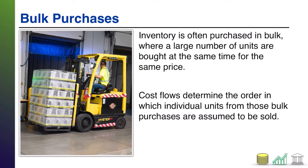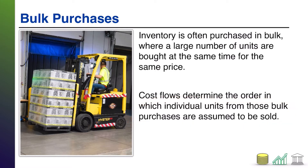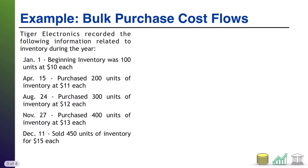Why does this matter in terms of cost flows? When a company does cost flows, they are basically choosing a method by which to establish what inventory they sold. They have to figure out which pieces of the bulk purchases actually got sold and should be factored into cost of goods sold, versus which pieces are left behind and therefore part of the ending inventory that will go on the balance sheet.